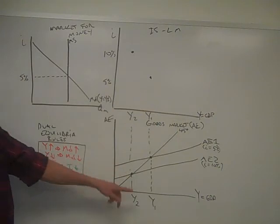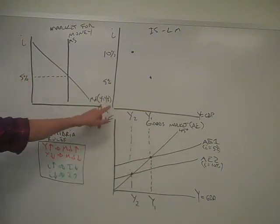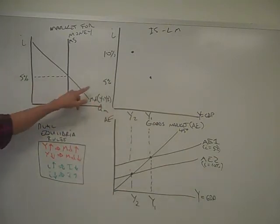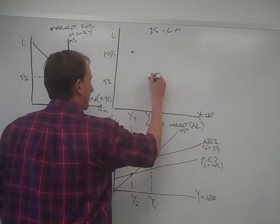But this assumes money demand assumes that Y equals something. Well, let's call it Y1. So if that's GDP, that's your income, maybe that's $100 billion or $200 billion. So if Y1, $200 billion, 5% is going to be the number, and that's that number right there.